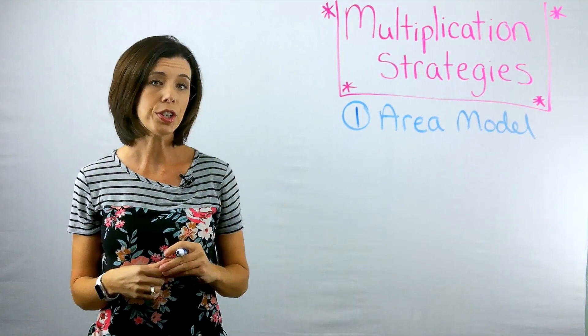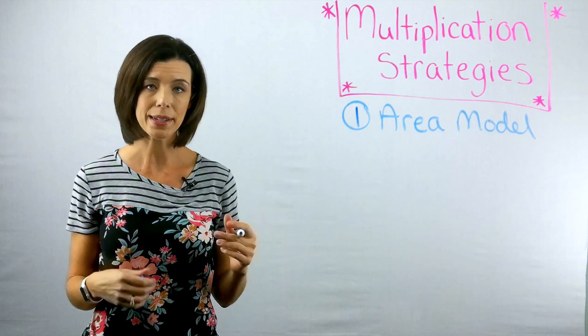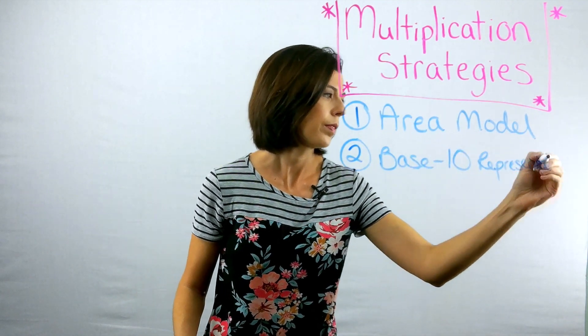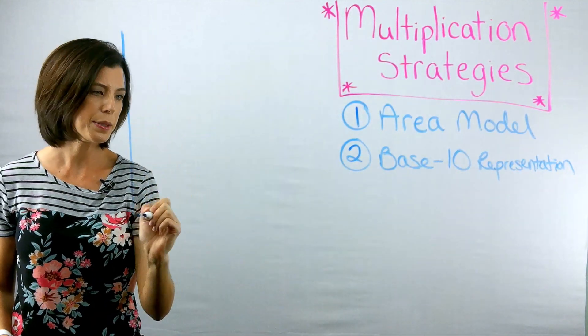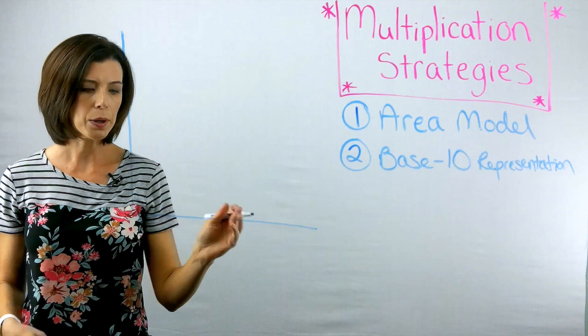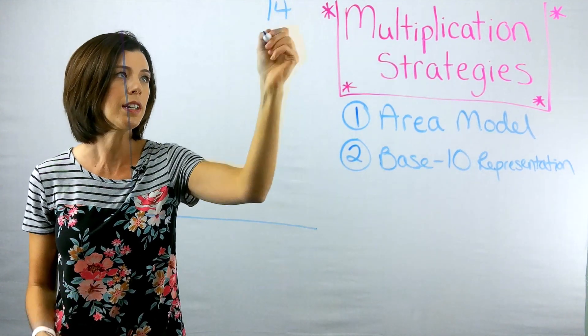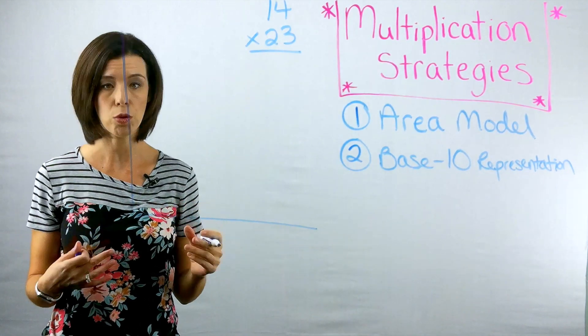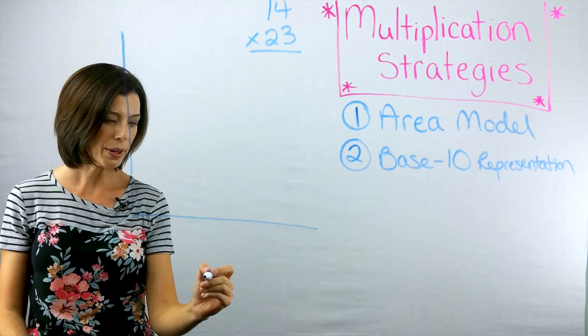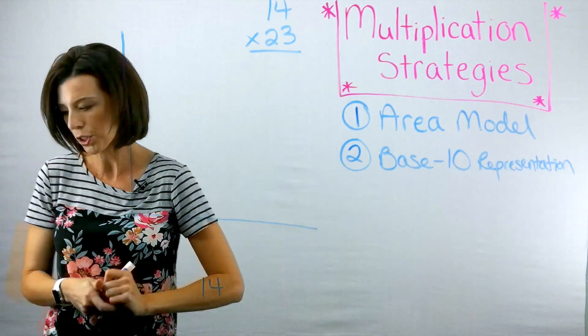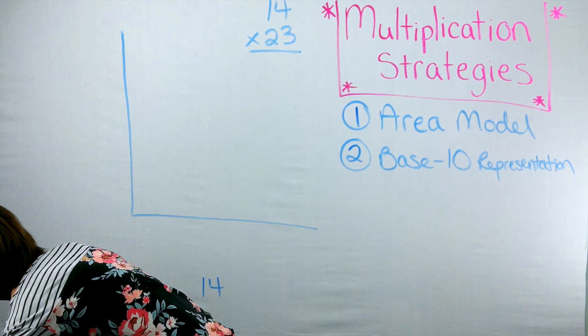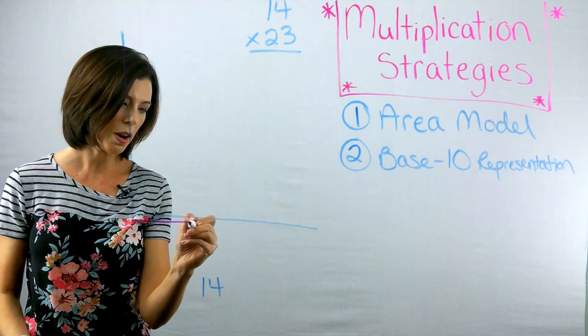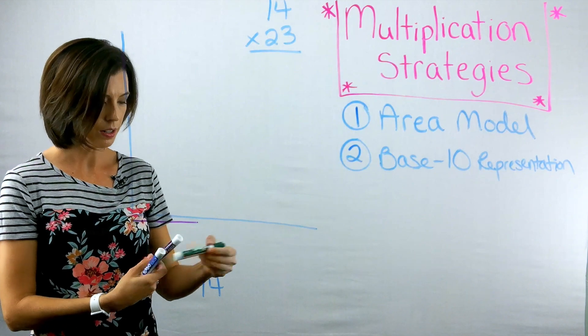The next strategy for solving multiplication problems might be to draw your base 10 blocks. So this would be a base 10 representation. How I can do this is by drawing my elbow here. And again, I'm going to break my 14 times 23 apart by place value and do this using my drawings. So on the bottom, I'm going to go ahead and do 14. So I know, let me change colors here.